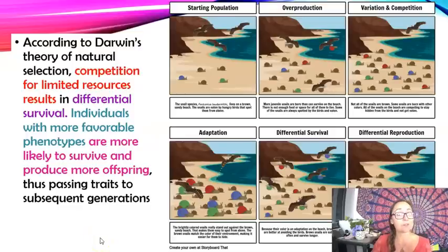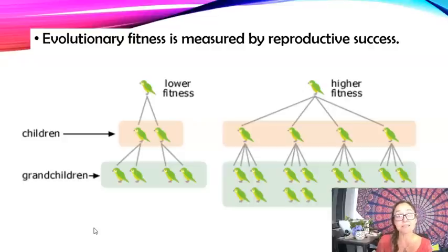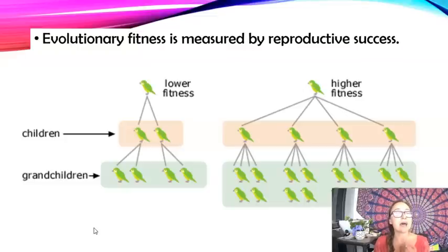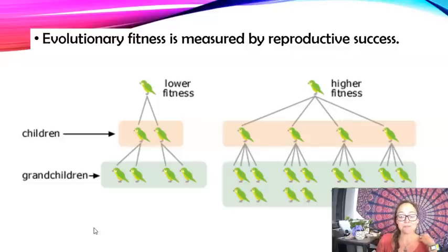It's important to include 'over time' or 'in the next generation' when discussing natural selection. Natural selection is also referred to as survival of the fittest. Fitness is a measure of reproductive success — it has two parts: how long they survive, but really it's how many offspring they produce throughout their lifetime. If presented with a question about fitness, pick the answer about the phenotype that has the most offspring — that is the most fit individual.